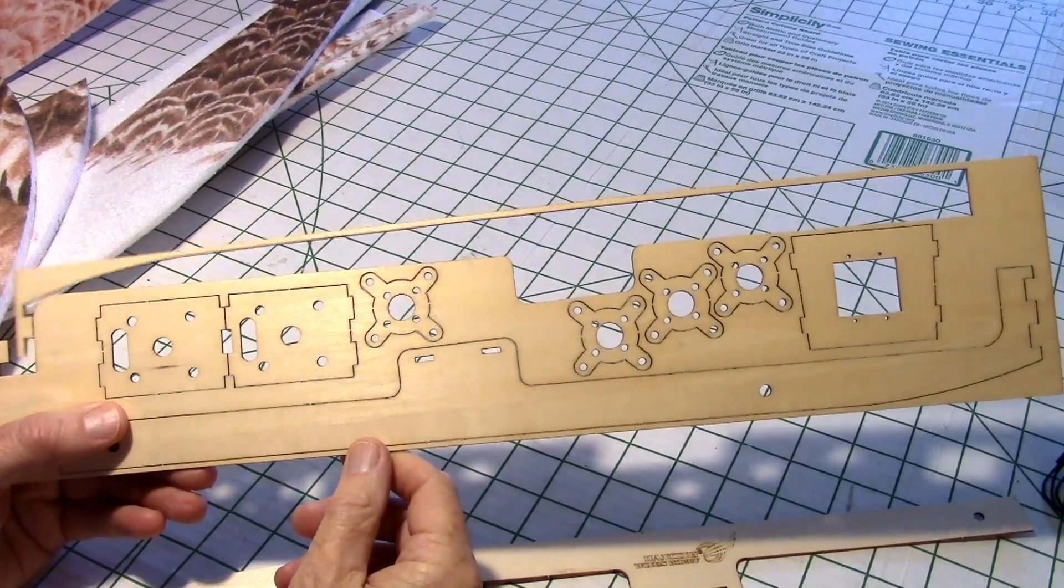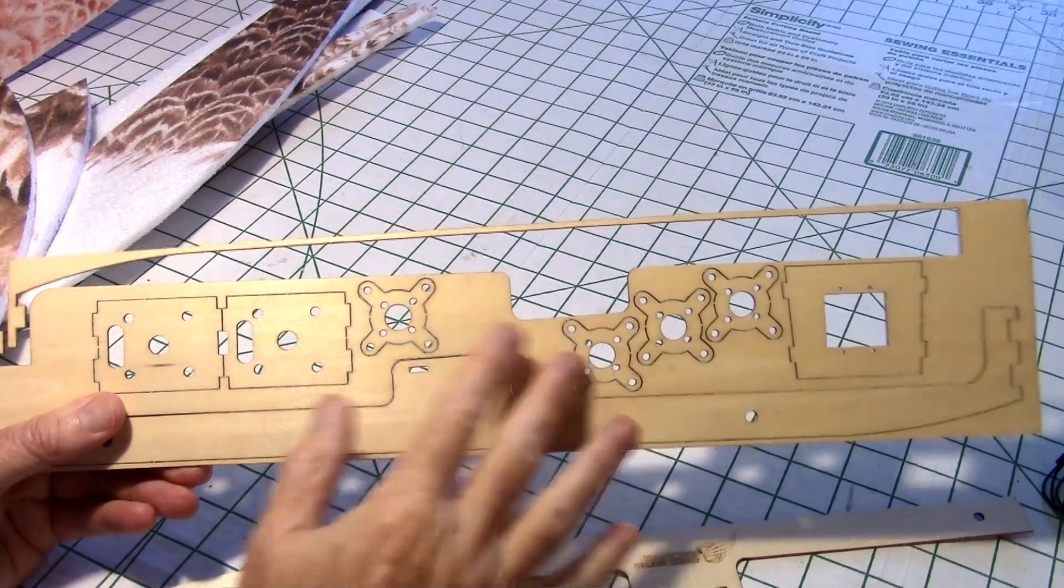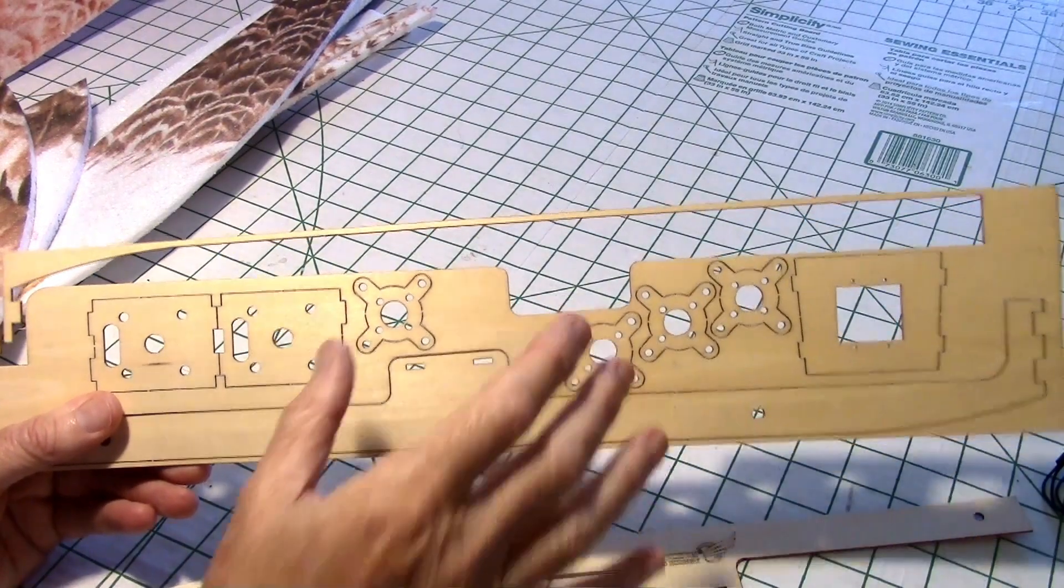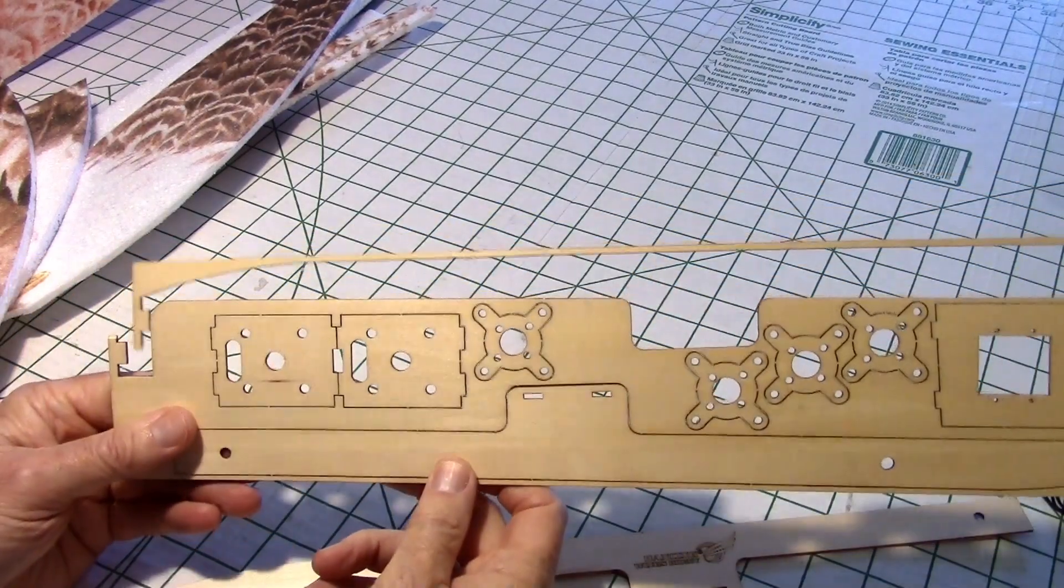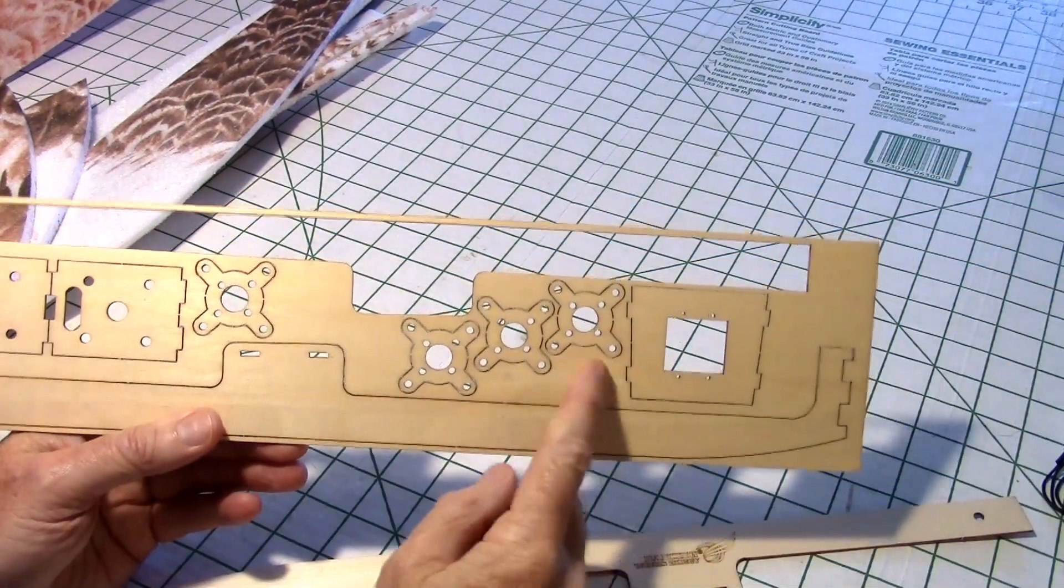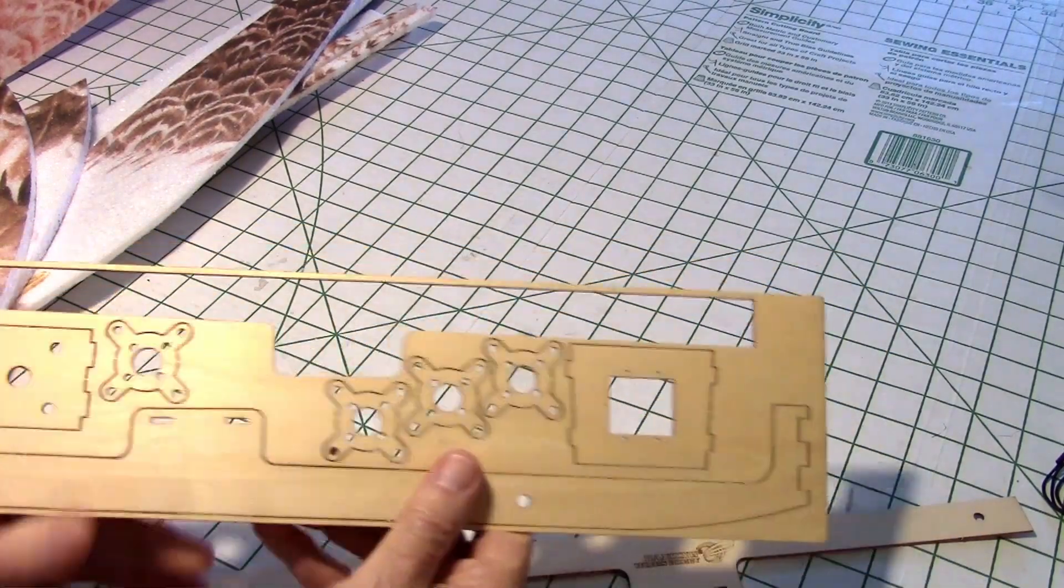So another good thing about this particular build is it does give you plenty of extra motor mount pieces, I count four of them right here. And I think you can use those to build up your motor mount so the motor sticks out far enough out the front. It has the same servo tray configuration and you can see this is a lot wider than the original bird.